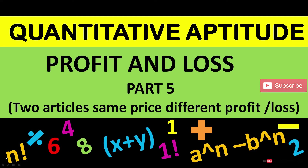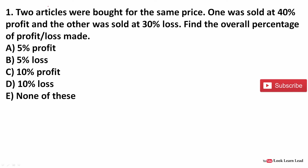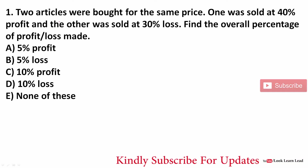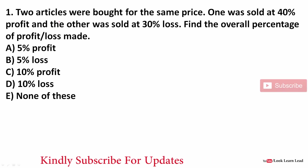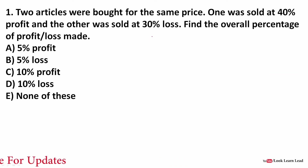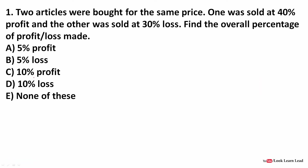Let's move on to the first question. Two articles were bought for the same price — one was sold at 40% profit and another was sold at 30% loss. Since everything is in percentages, we can consider the cost price as 100 rupees each.